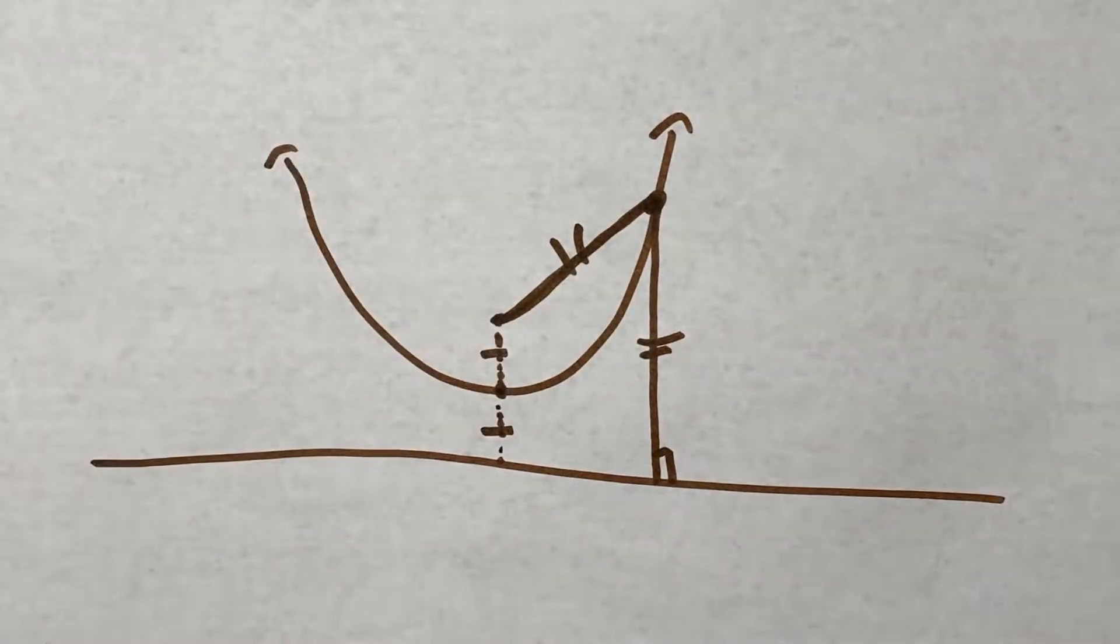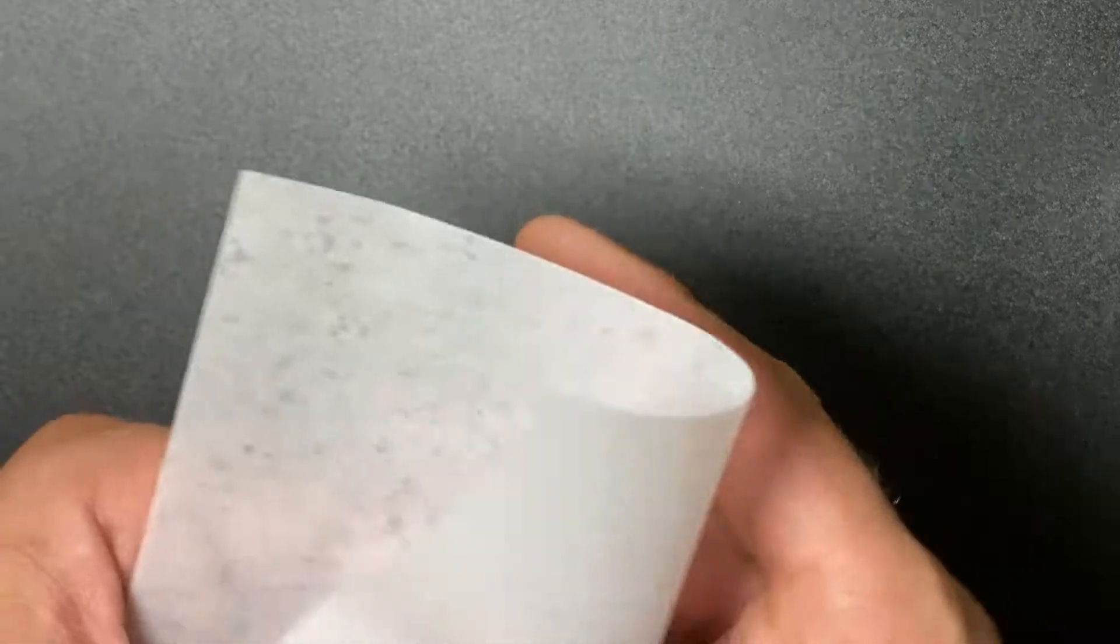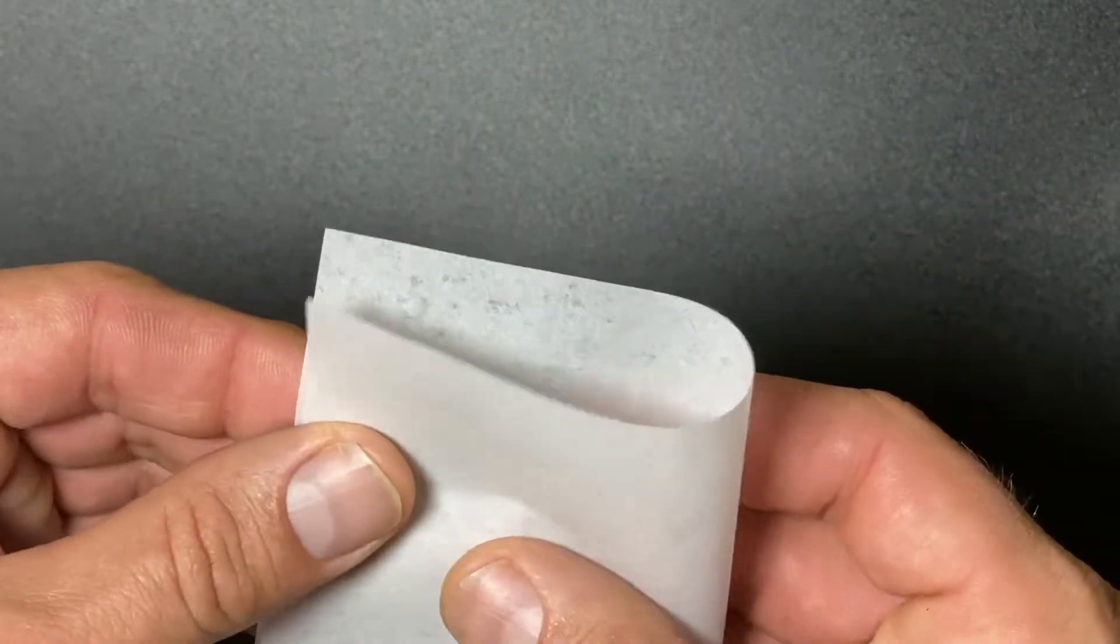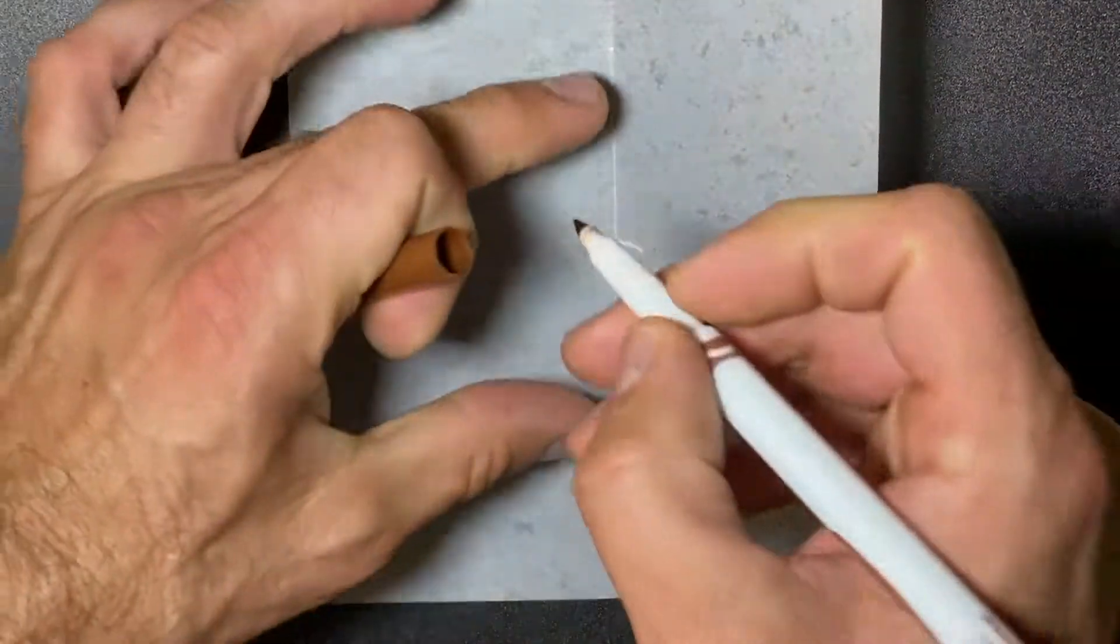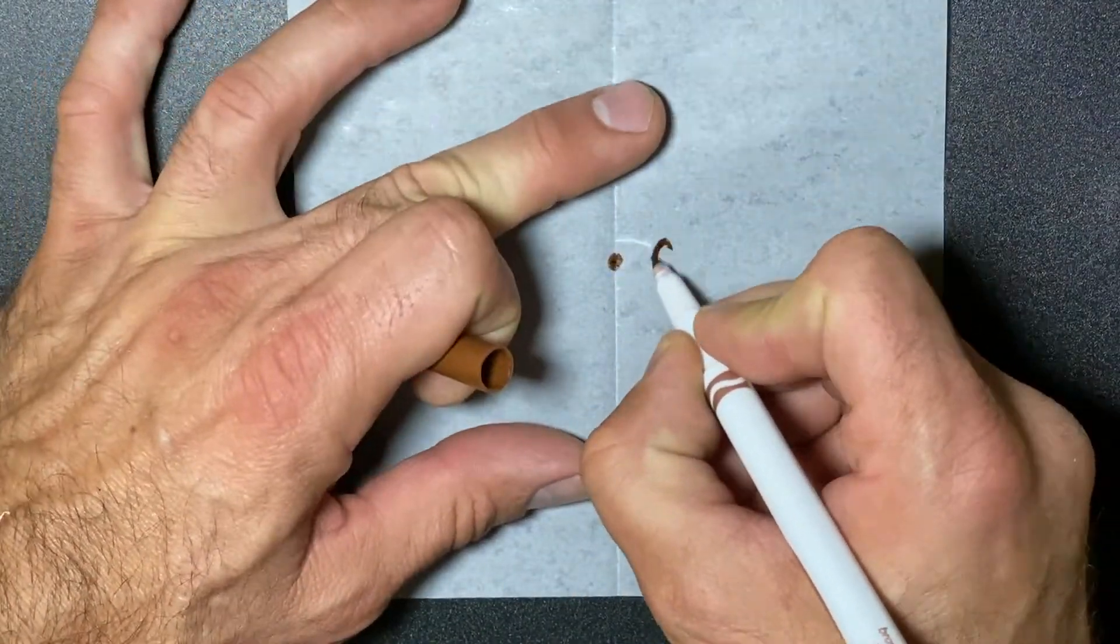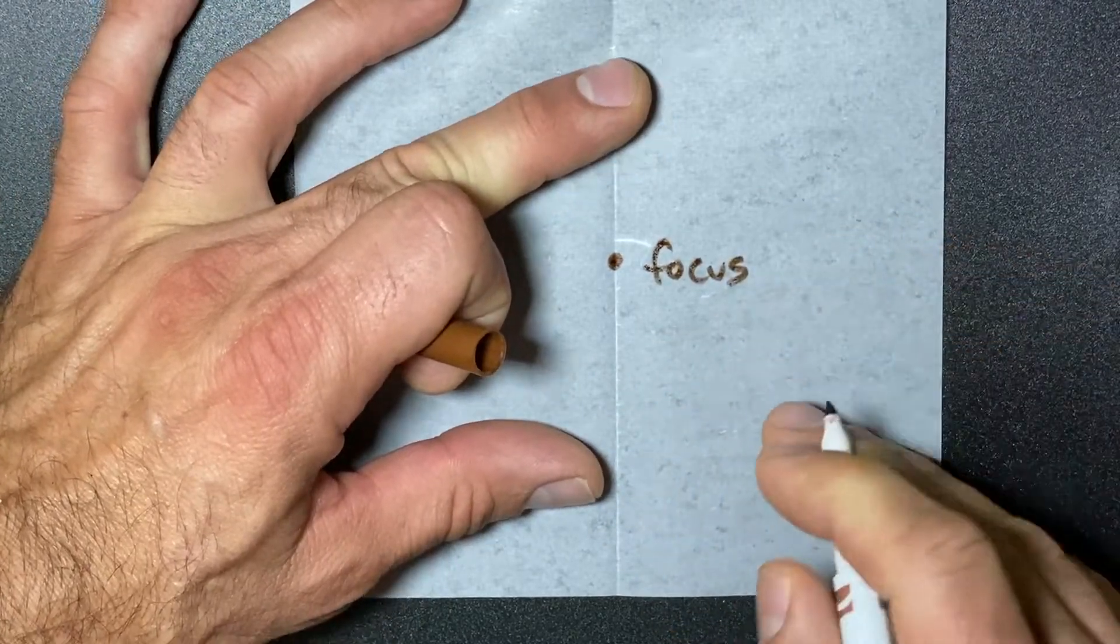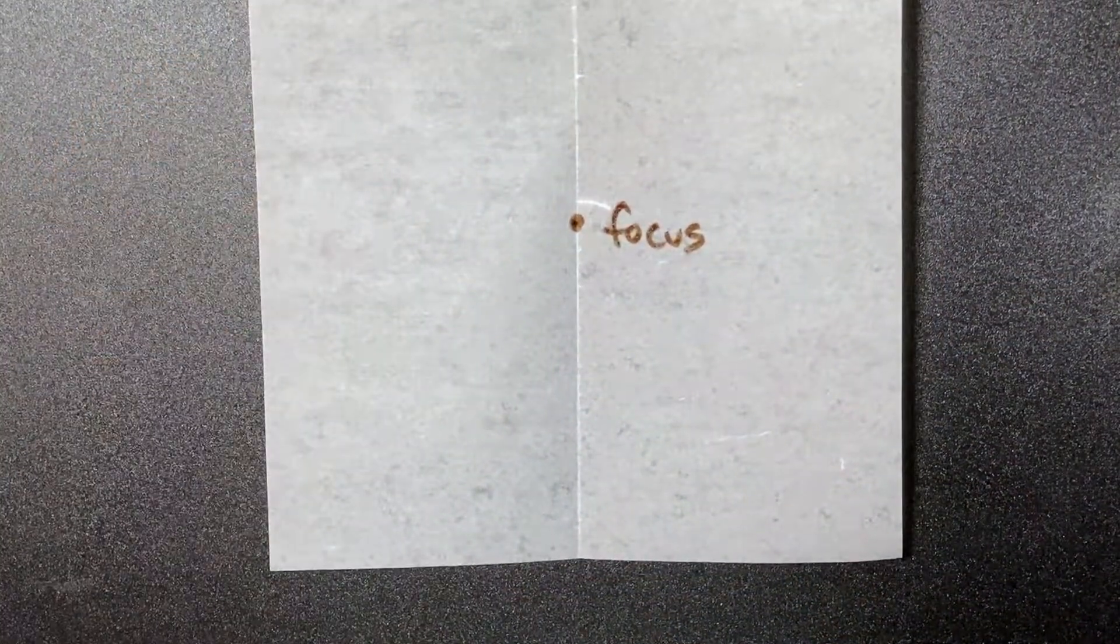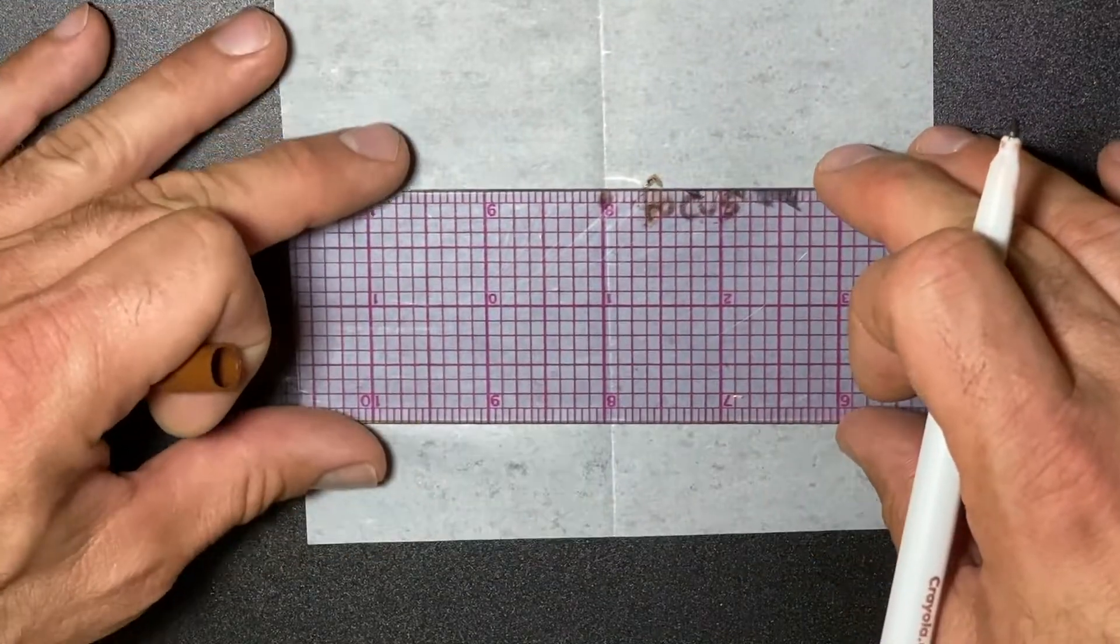We're going to see how when the directrix line and the focus point are equal, it will actually form a parabola. Here's what we're going to use: tracing paper. We start by folding the tracing paper in half really just to find the middle, because I want it centered.